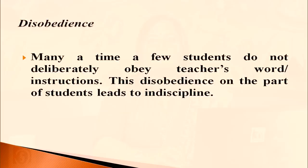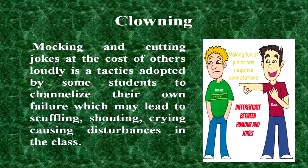Next is disobedience. Many times a few students do not deliberately obey teachers' words or instructions; they start making a noise. This disobedience on the part of students leads to indiscipline. Next is clowning — mocking or cutting jokes on others loudly — a tactic adopted by some students to channelize their own failure, which leads to shouting, crying and causing disturbances in the class.